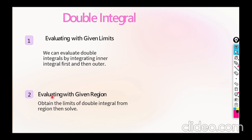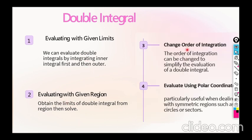In Type 2, instead of being given limits, we are given a region. We first find the limits from the region, then evaluate like Type 1. In Type 3, we learn the change of order of integration. Many times the inner integral is difficult to evaluate, so we change the order of integration to make it simpler.